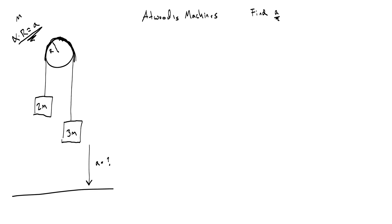On the 2m block, there is a weight force down, which we can call 2mg, and then there is some tension in the rope, which we can call t. For the 3m block, there is a weight force down, 3mg, and some tension acting up that we could also call t.